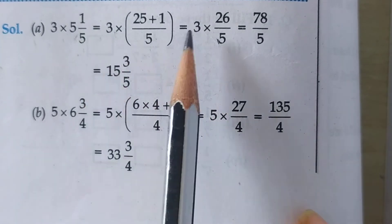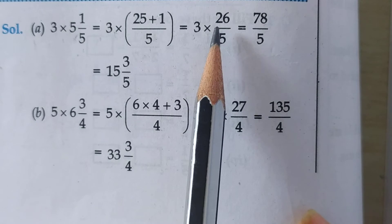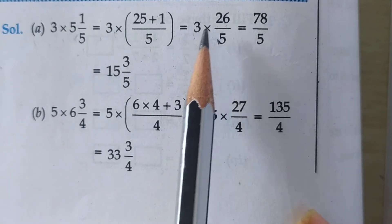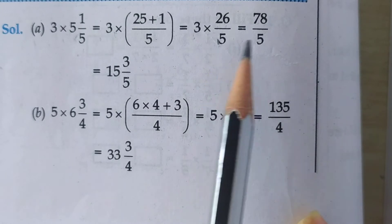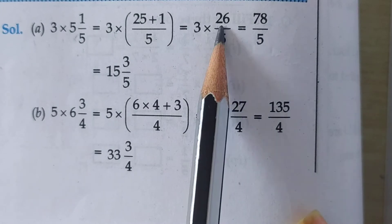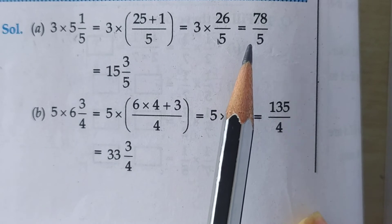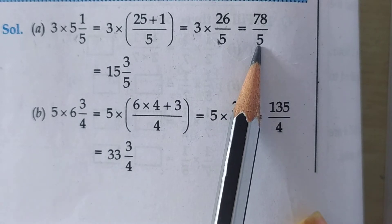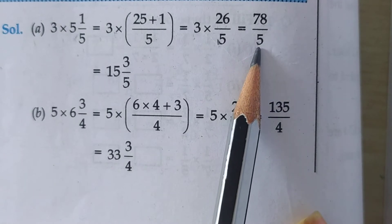Write down 3 as it is. Now students, multiply the whole number with the numerator: 3 threes are — 3 times 26 are 78. Write down 5 as it is, because 26, 3, or 78 is not divisible by 5. Now 78 upon 5 is an improper fraction.